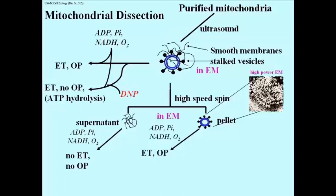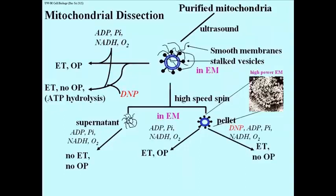But the isolated stalked particles had all of the properties of intact mitochondria. They could conduct electron transport and oxidative phosphorylation, and upon adding dinitrophenol, these stalked particle isolates would do electron transport, but would make no ATP. And if you added ATP to dinitrophenol treated particles, the ATP would be hydrolyzed.